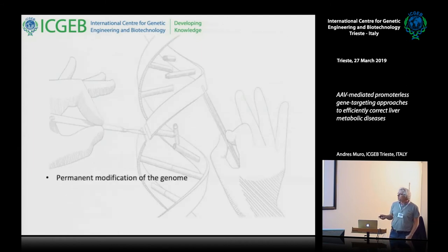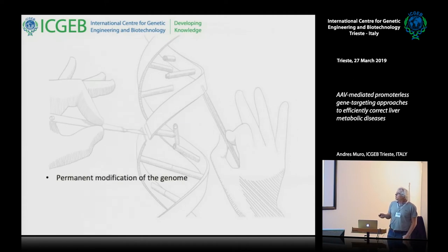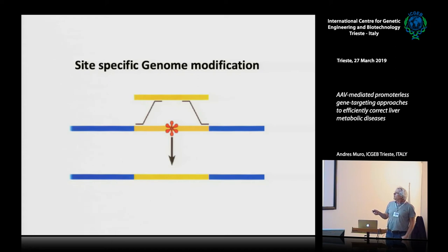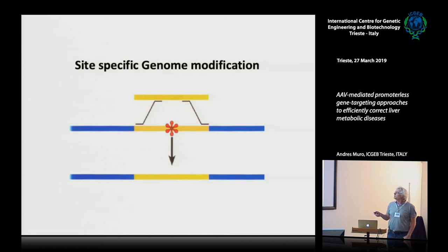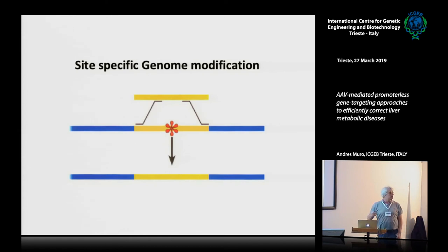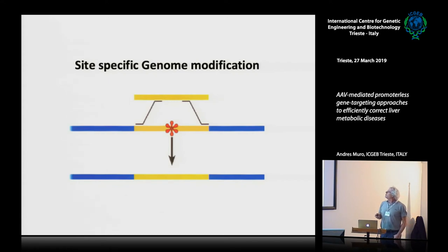Another solution is the permanent modification of the genome, which is what we are going to see today. The concept is theoretically very simple: we have our mutated gene, we have a donor DNA containing the wild-type sequence, we put everything in the cell, homologous recombination occurs, and we end up with the corrected gene producing the wild-type protein.